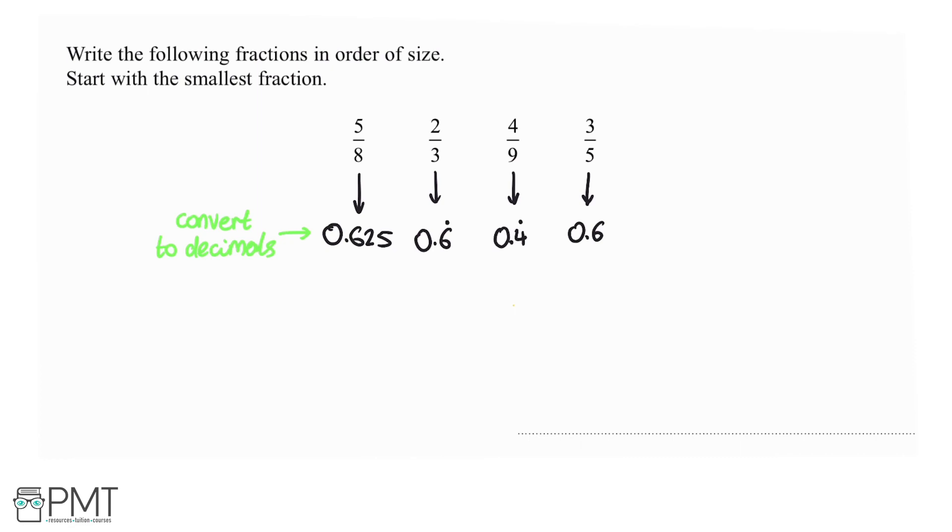So what we've done in this step is we've converted to decimals. Now you might be able to just look at that and see which is the biggest and which is the smallest and put them in order. If so, that's great. But what I find sometimes a bit easier is if we now convert into a percentage.